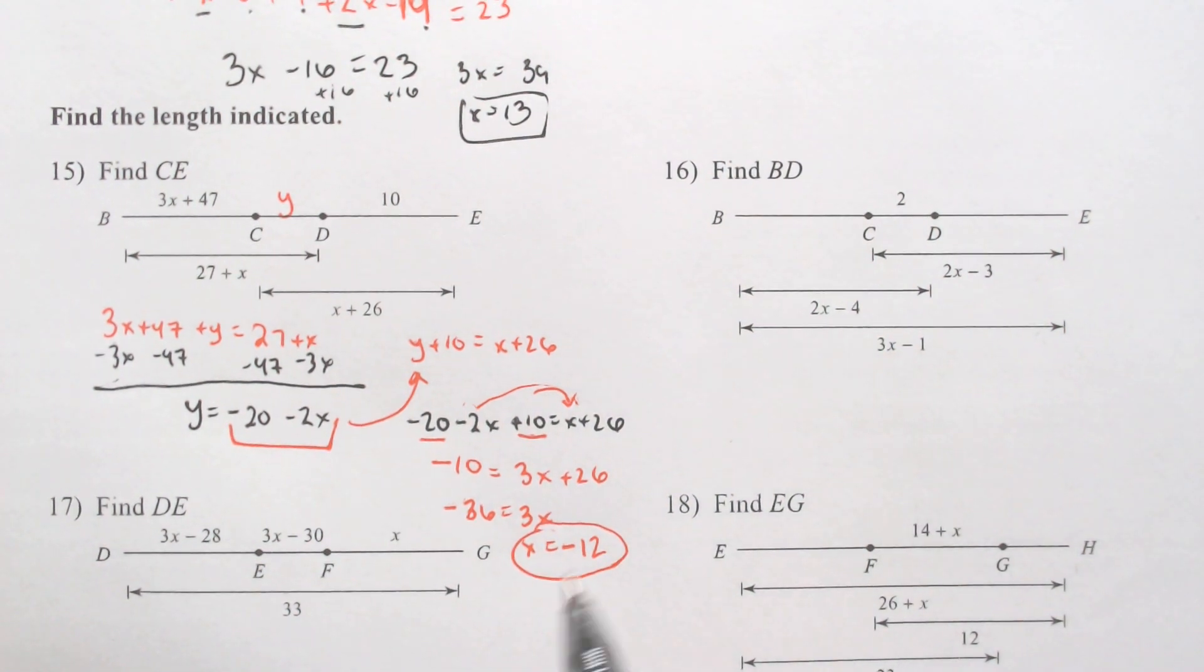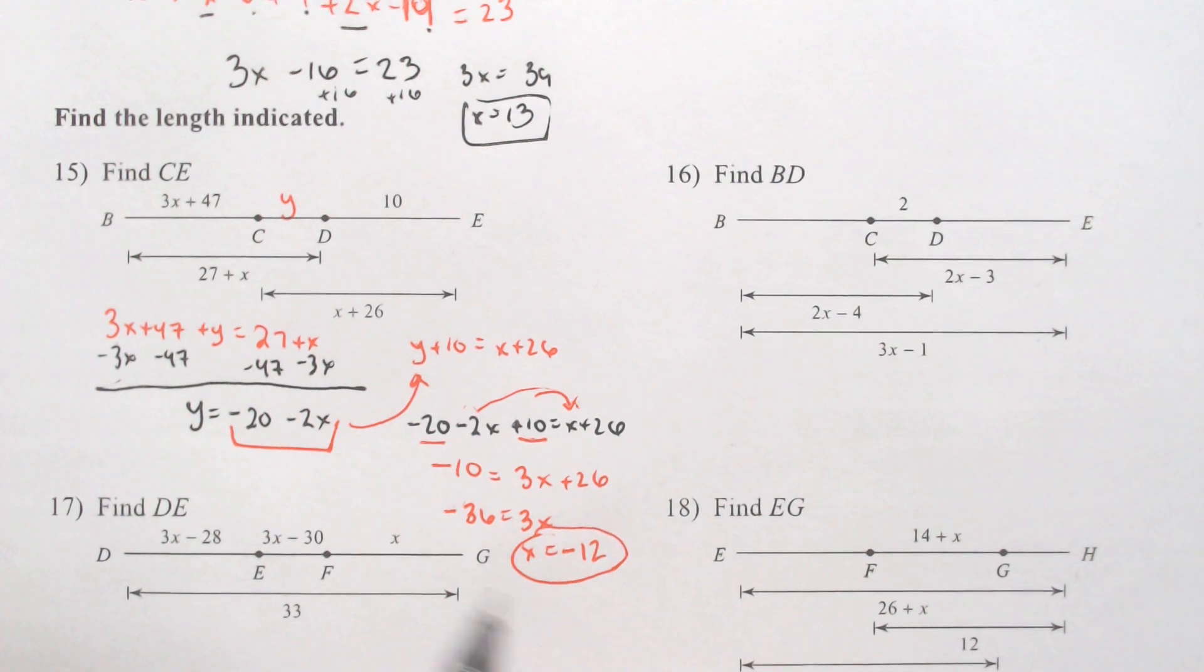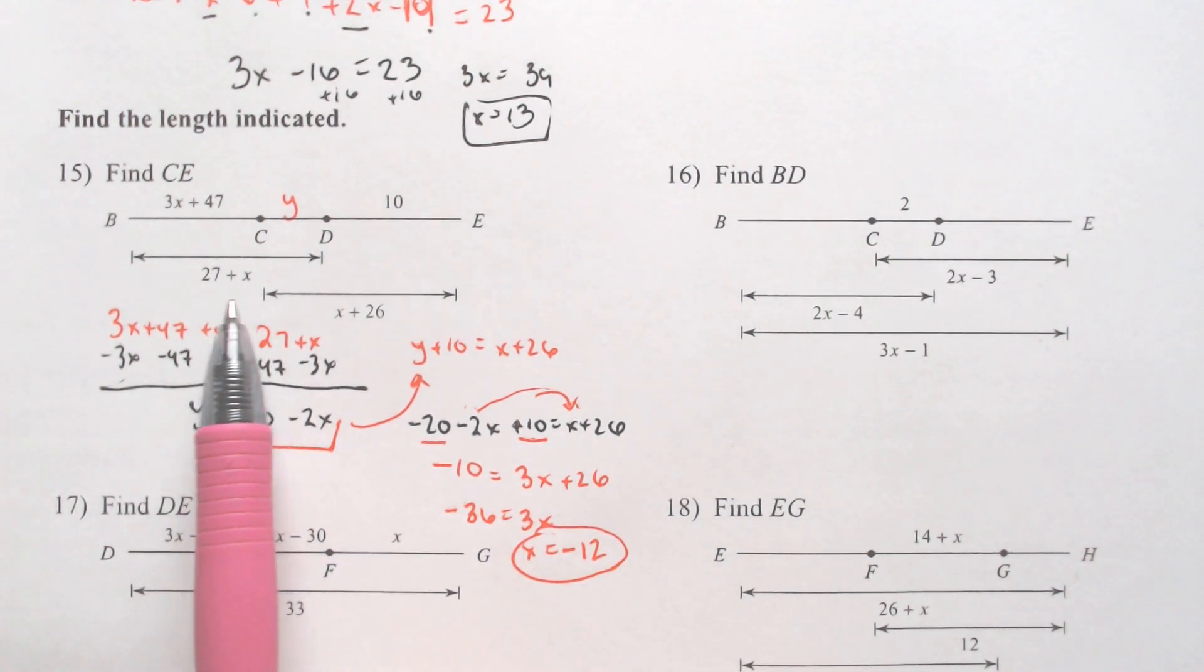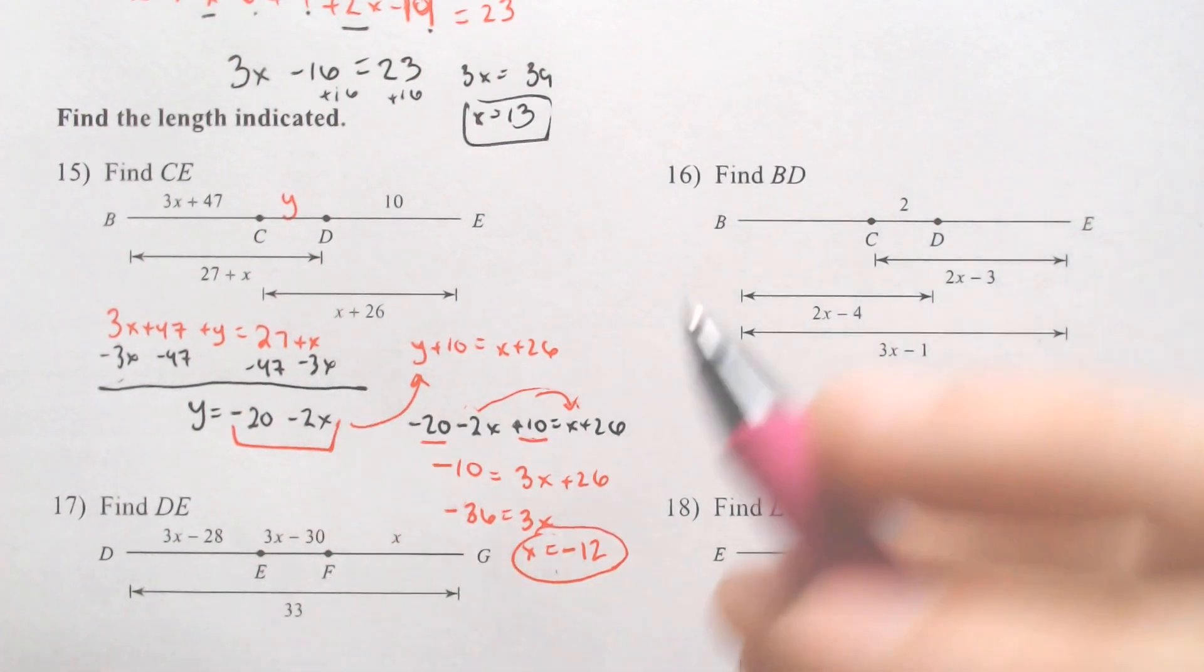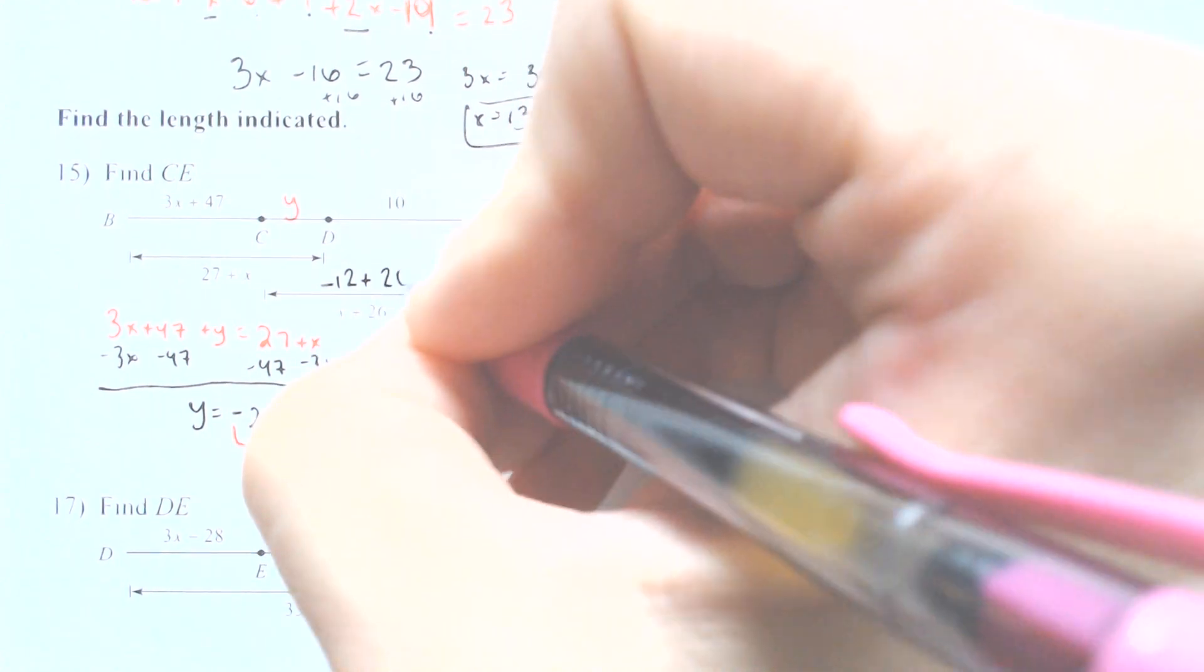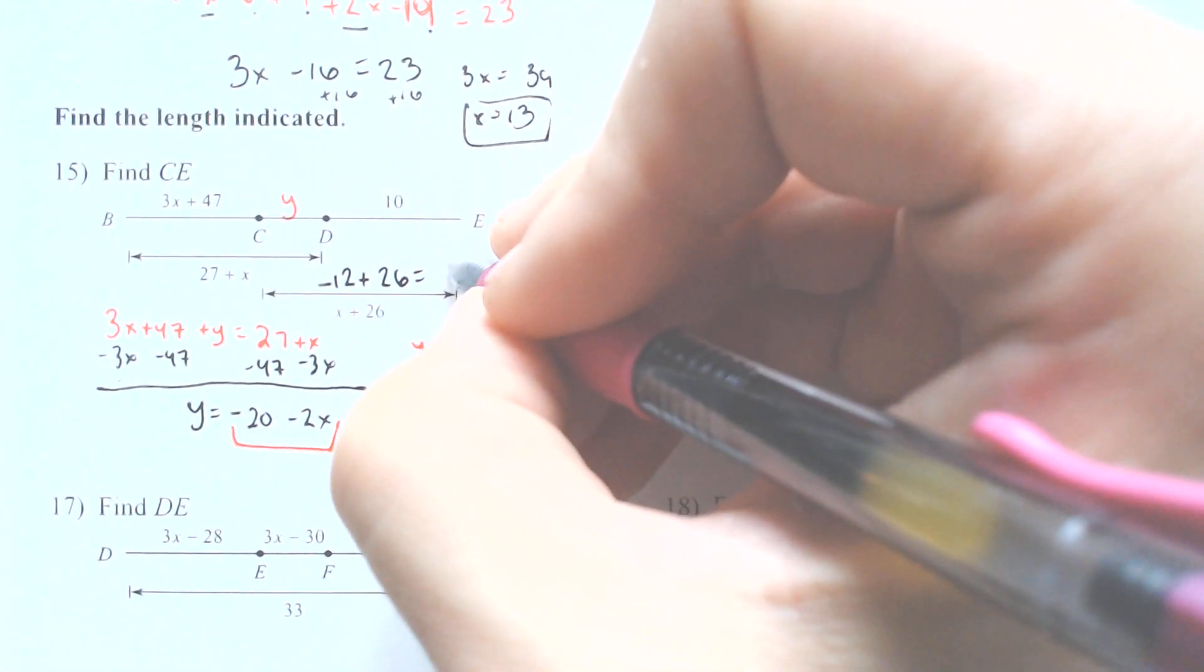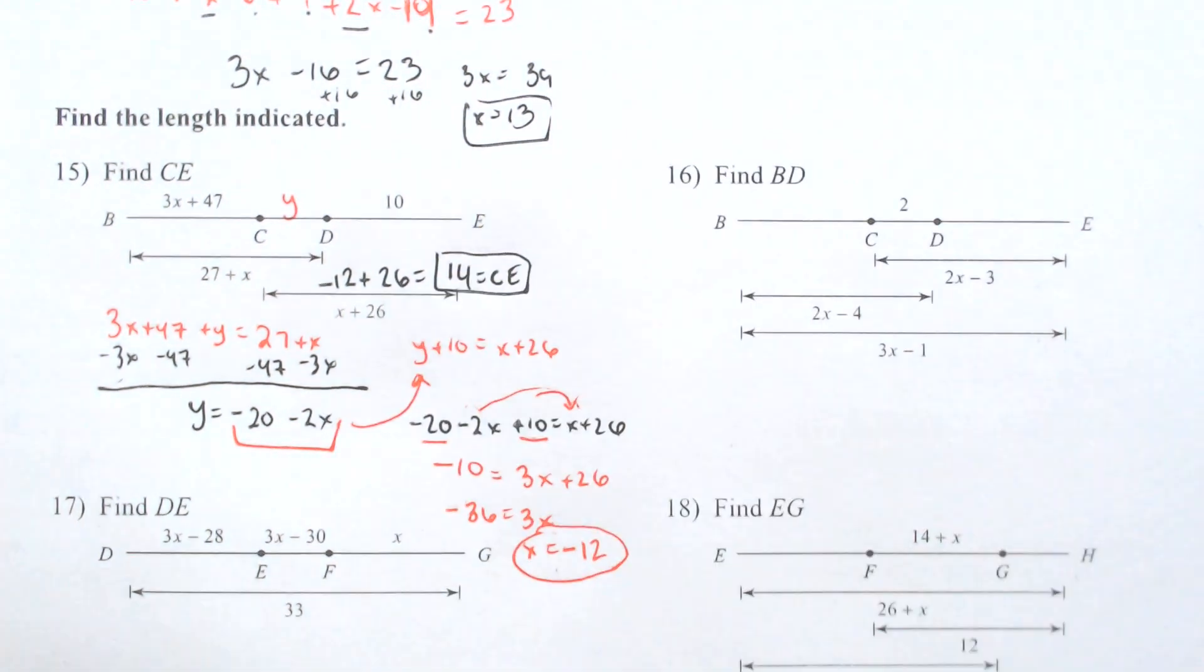Notice that we're not looking for X. We're looking for C all the way to E. C all the way to E is this chunk from here, C all the way to E. We found out what X is. We can plug that in for X, negative 12 plus 26 equals 14 for C all the way to E.